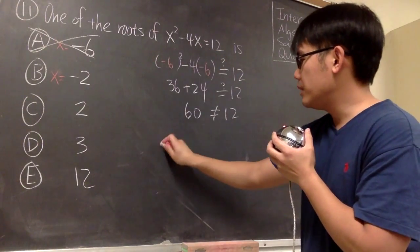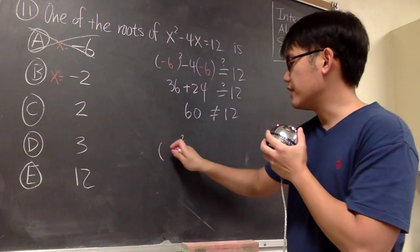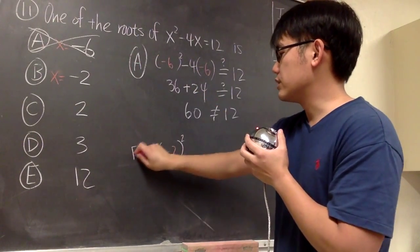So we have the x squared, let me put down, open the parentheses, and then to the second power. Inside we have the negative 2. And this was for choice A, this is for choice B.